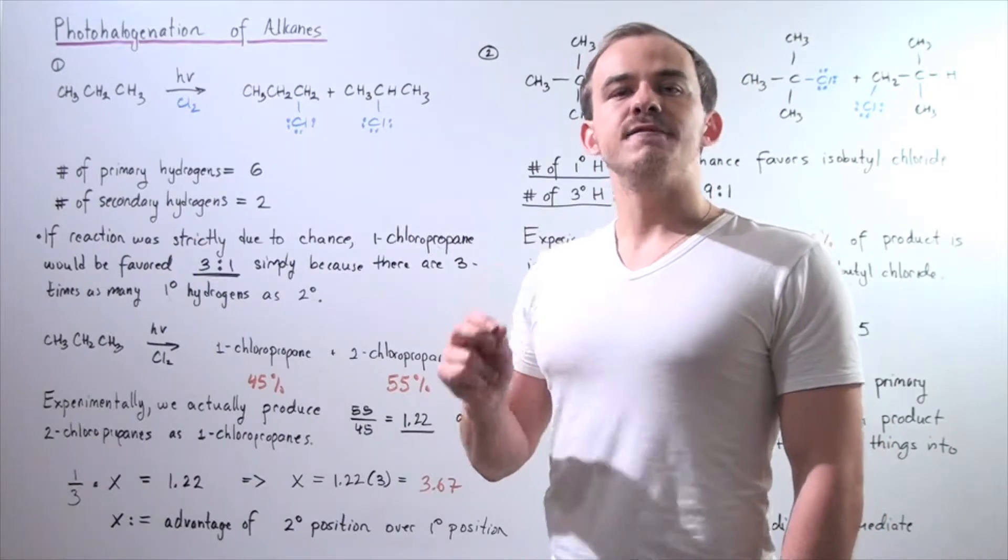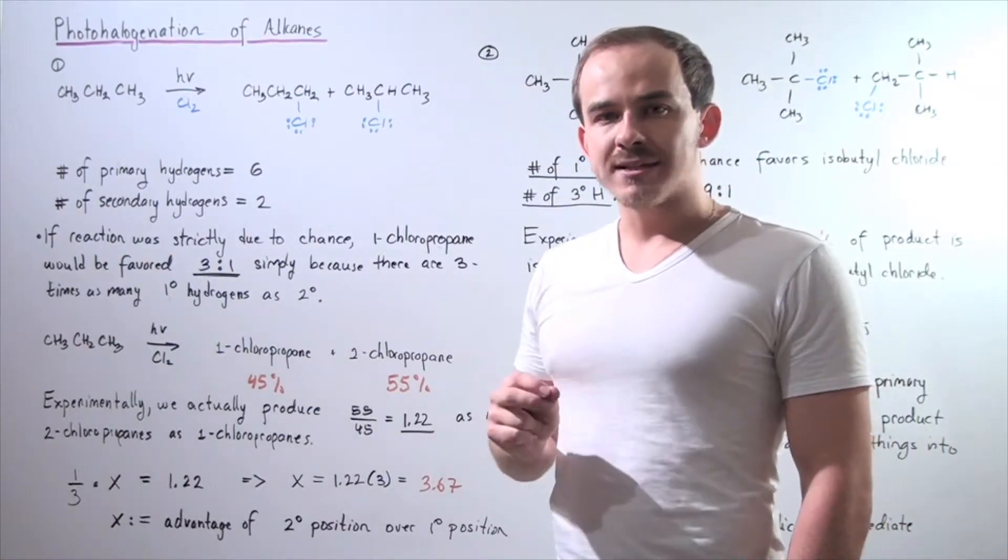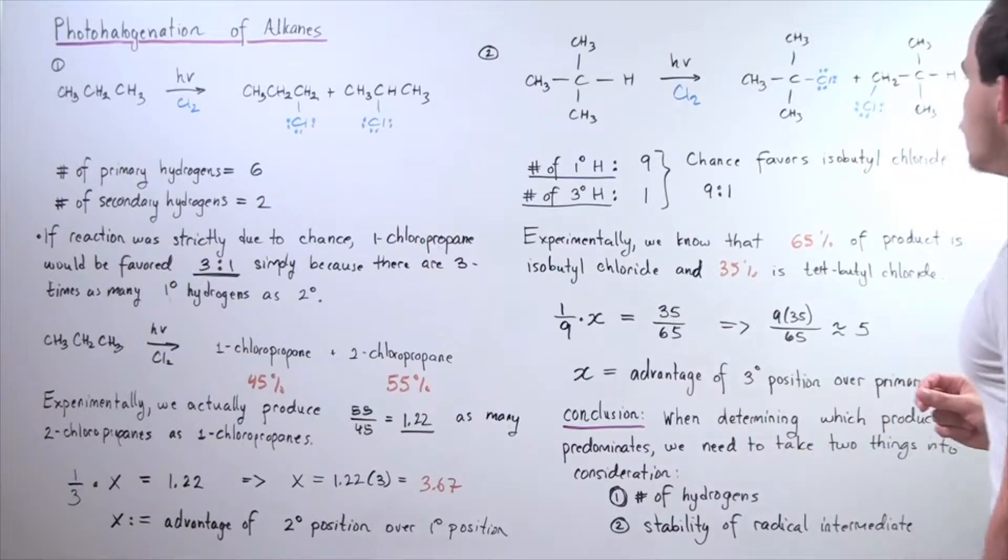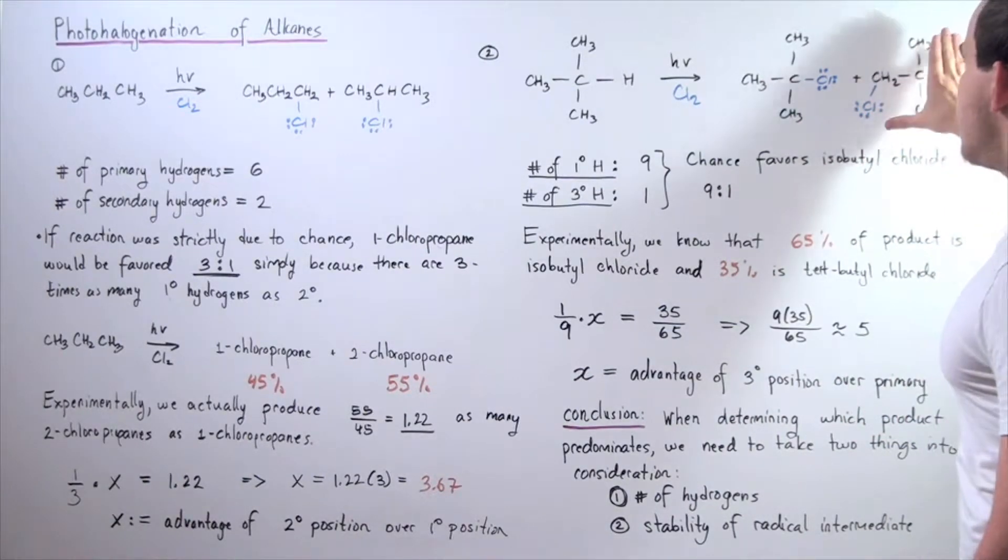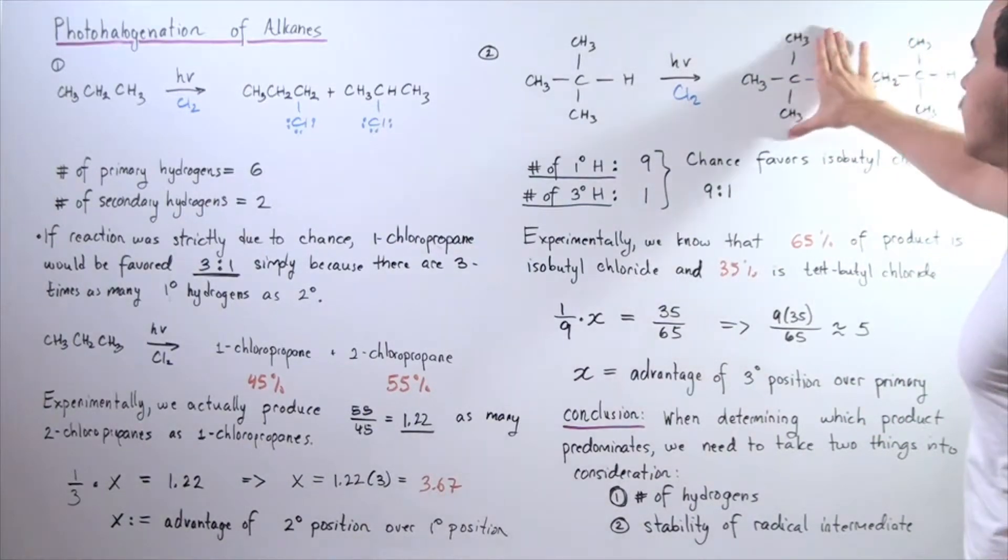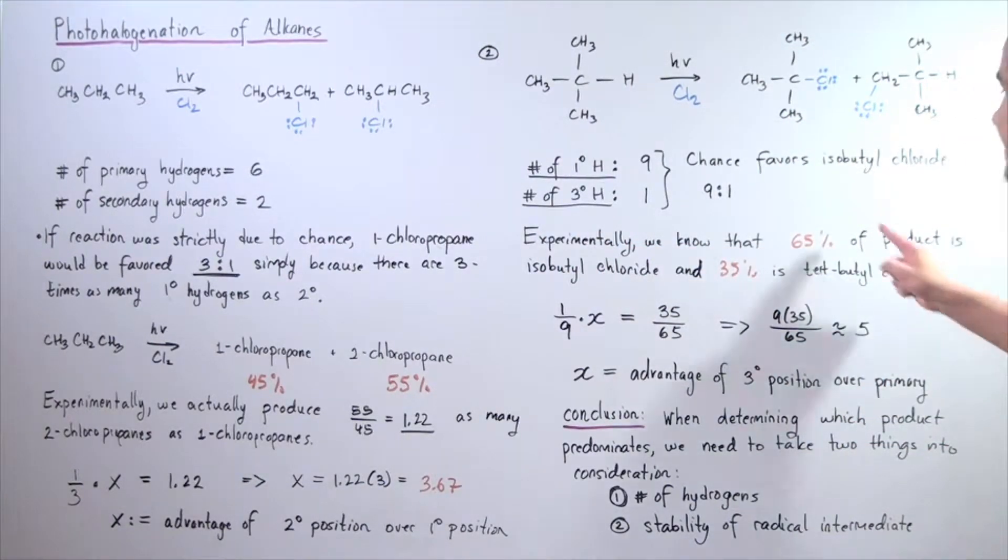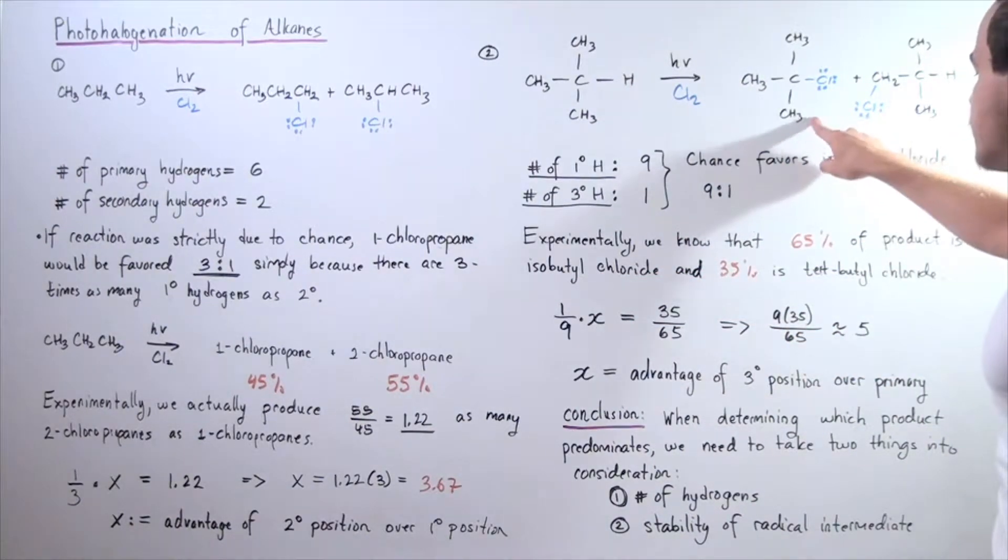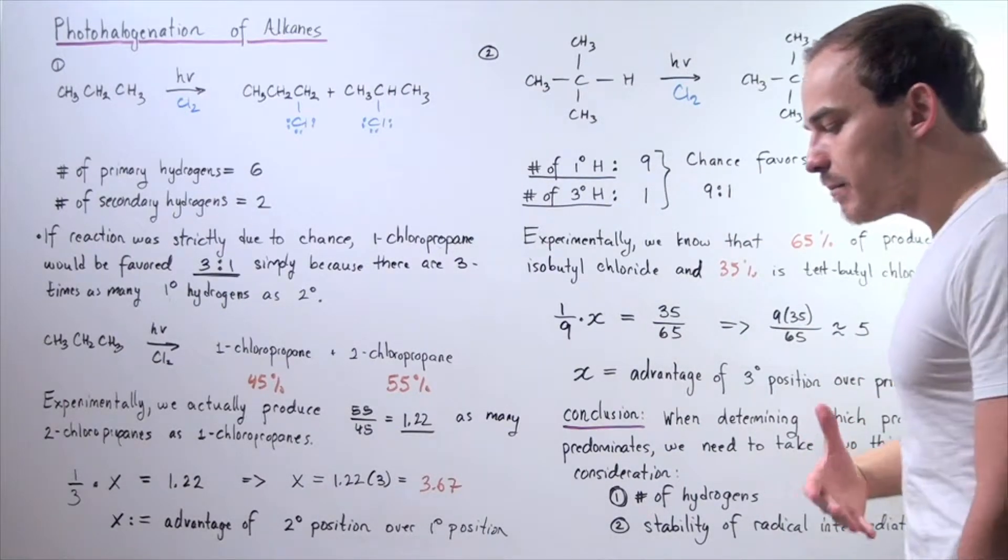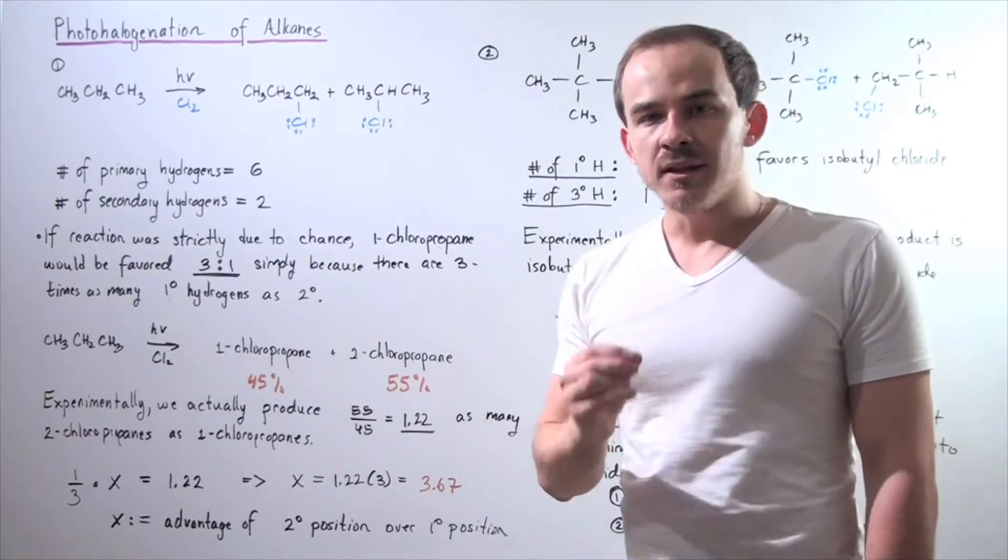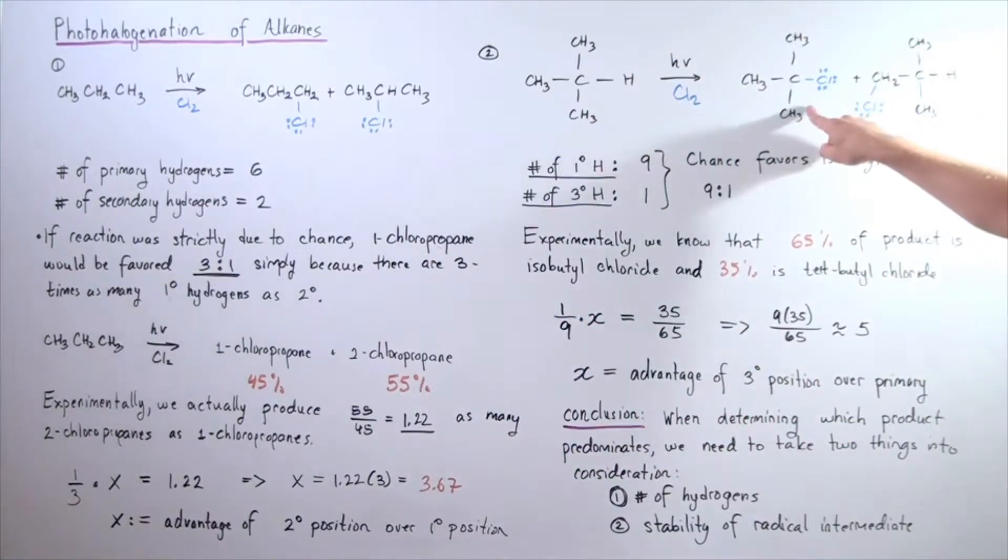So, that means if our reaction was simply due to chance, we would produce 9 more of these molecules than of this molecule. But, experimentally, we know that 65% of the product is isobutyl chloride while 35% is tert-butyl chloride. So, that means there must be some advantage, some stability advantage of this one over our isobutyl chloride.